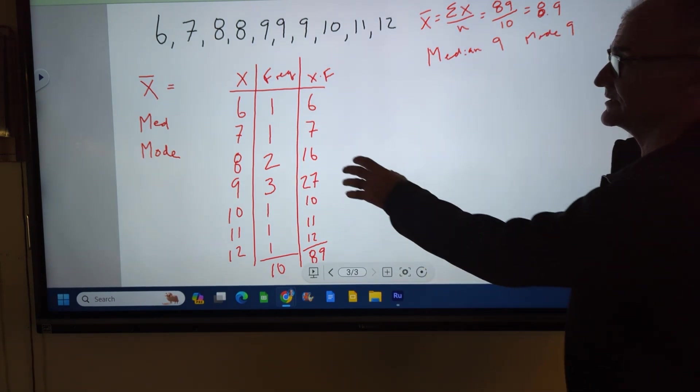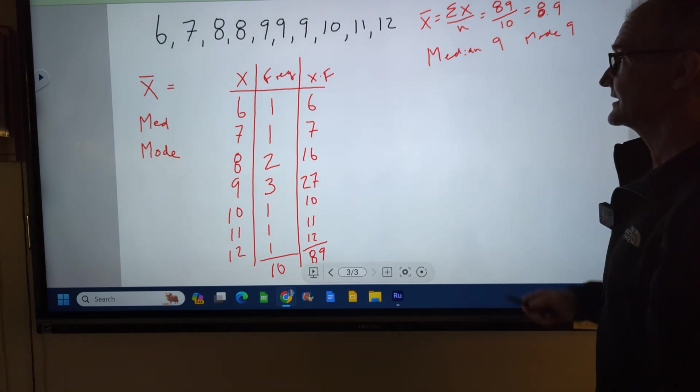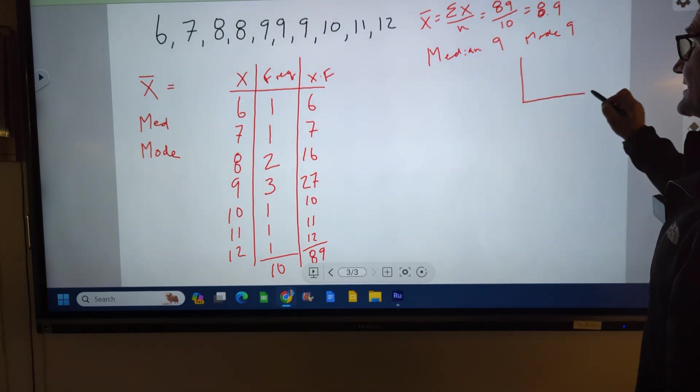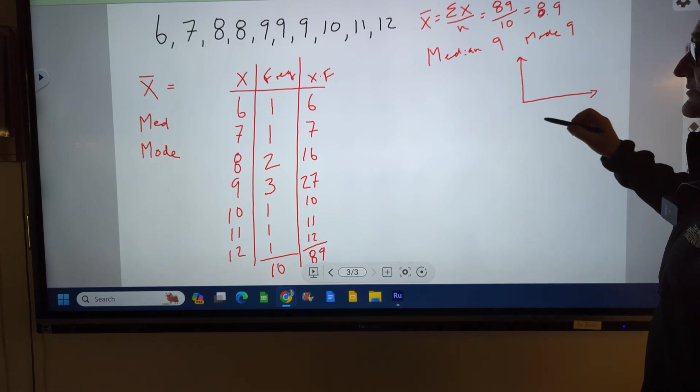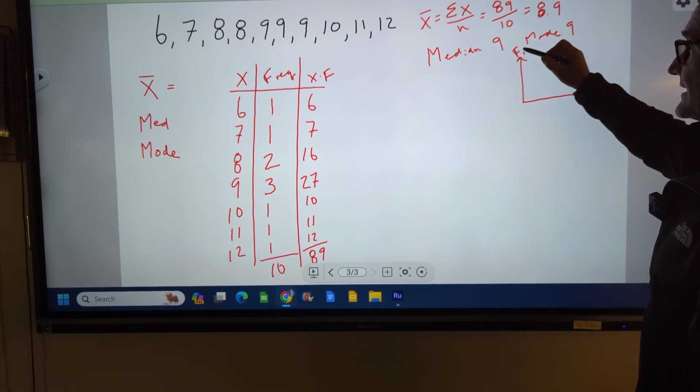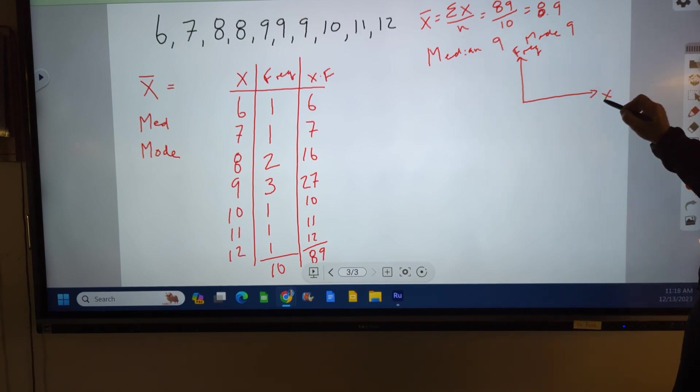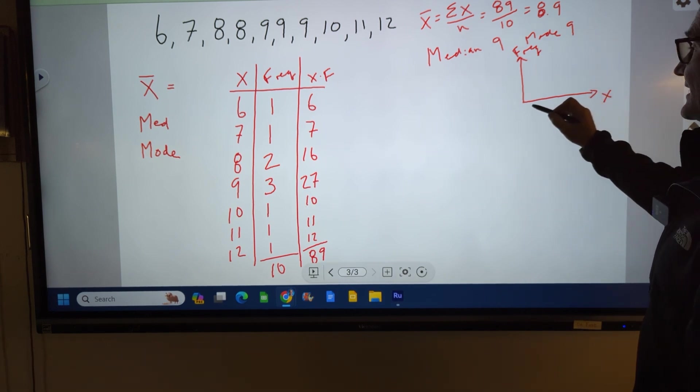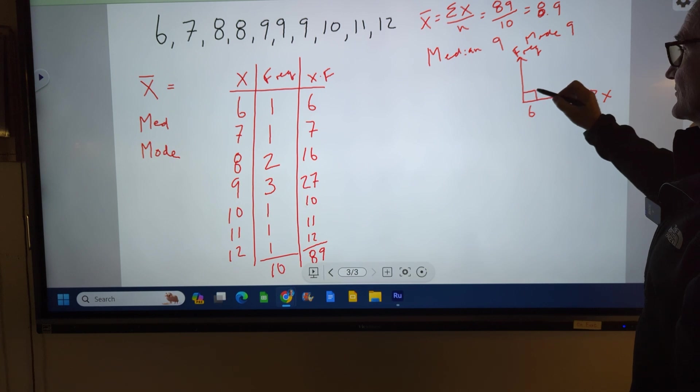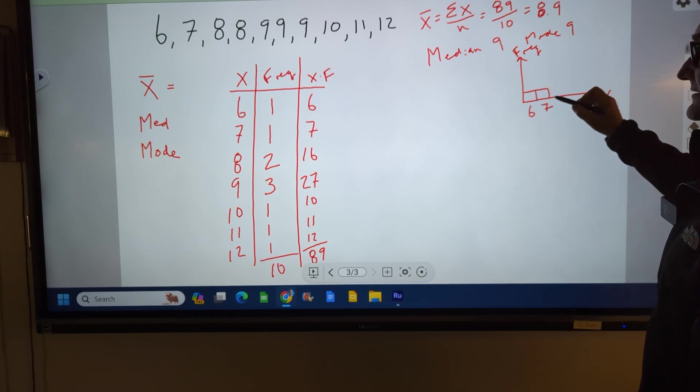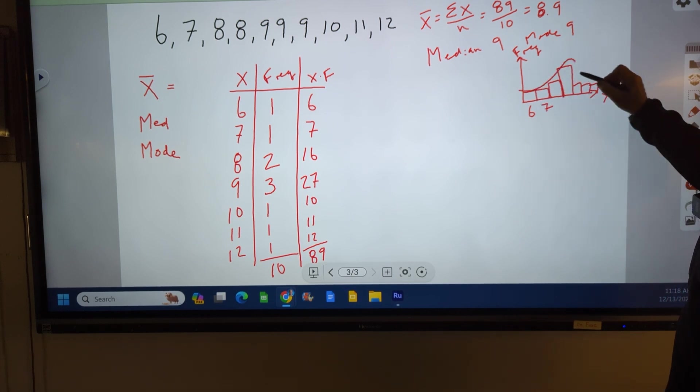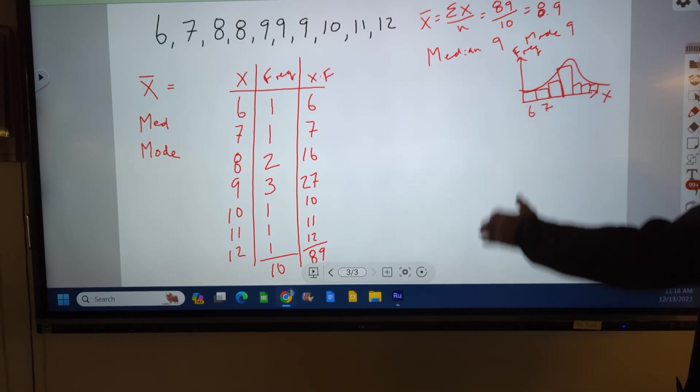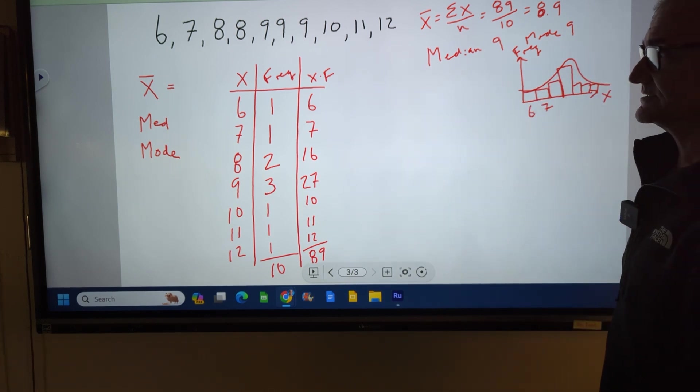So there's my mean, median, mode, my frequency distribution. I could draw out a histogram and see how it's represented, whether it has normal distribution. Vertical axis is how often it occurs, horizontal axis is x. I have one value of 6, one value of 7, two values of 8, three values of 9, one value, one value, and one value. It looks like a pretty normal bell curve, so it's considered a normal distribution.